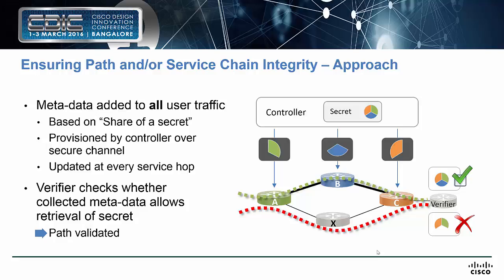The approach we're taking is: we take a secret, split it into multiple portions, and give every single portion of that secret to an individual node. As a packet traverses through the network, it picks up these pieces of the secret, and at the very end we're either able to reassemble the secret and verify that the packet went the right way, or we find that there is a piece missing in the reassembly — meaning the packet went the wrong path. In the digital world we can't color the packets, so we need to get smarter.